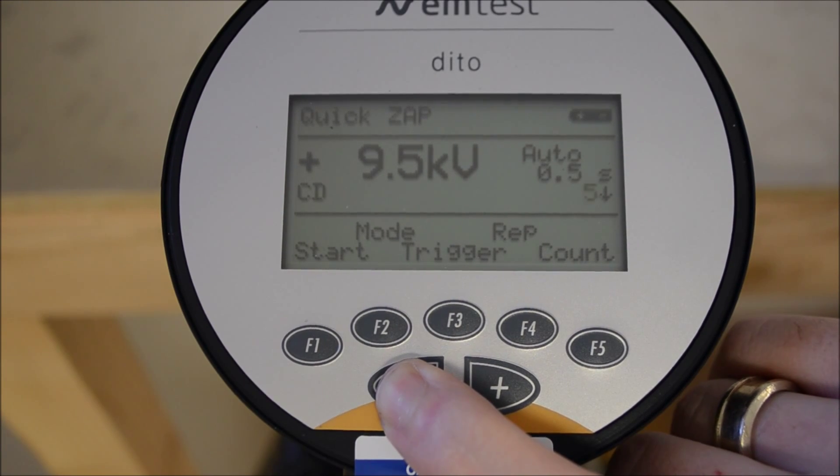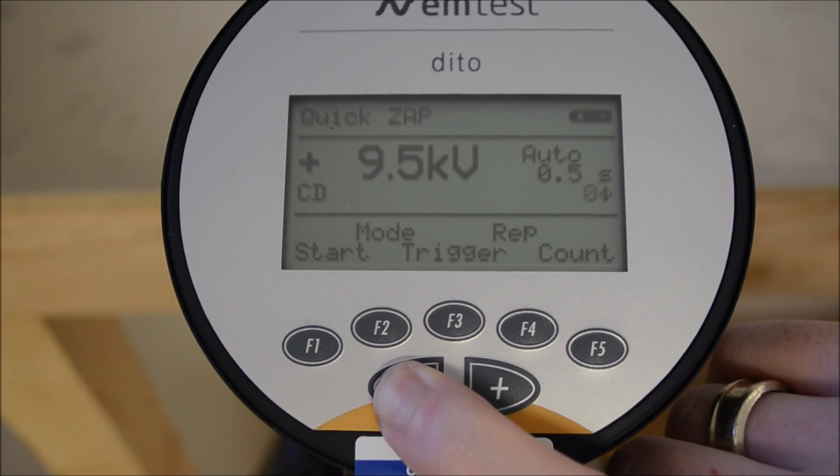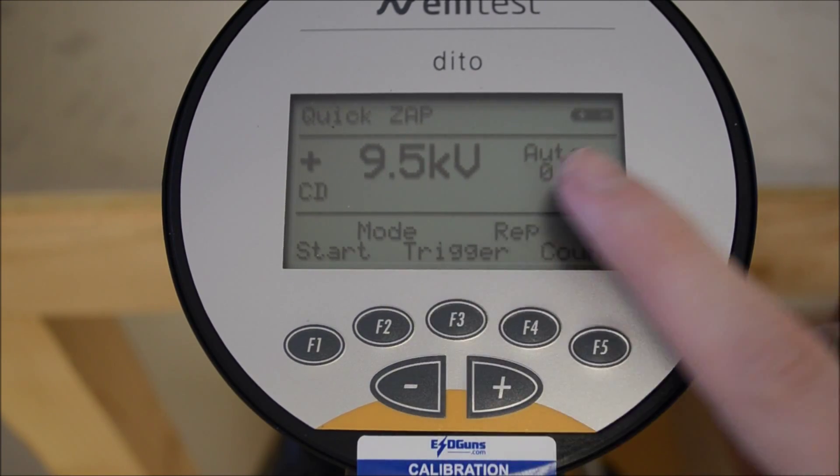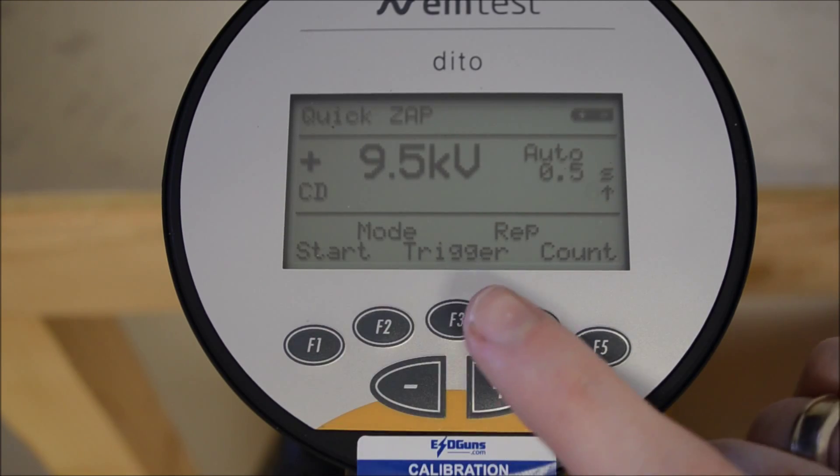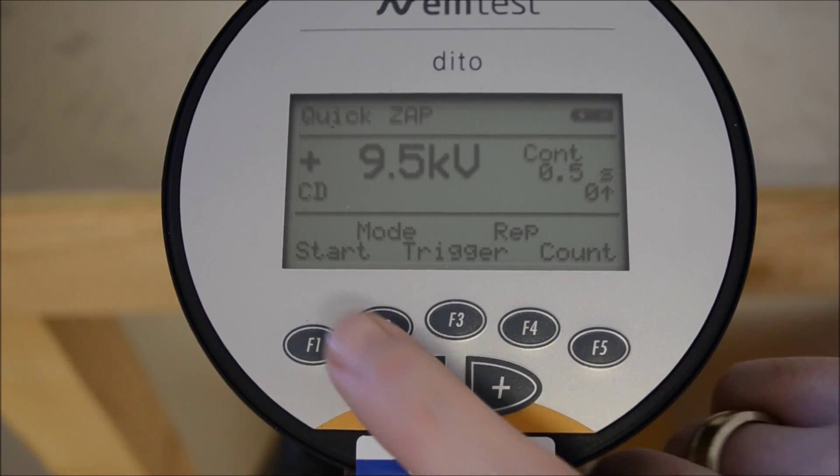This will allow us to discharge as many times required while tracking successful arcs. Changing trigger mode to continuous will allow us to hold the trigger down and keep the unit firing, releasing the trigger when complete.